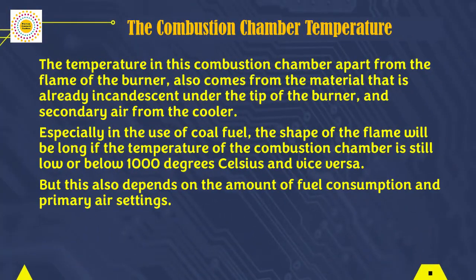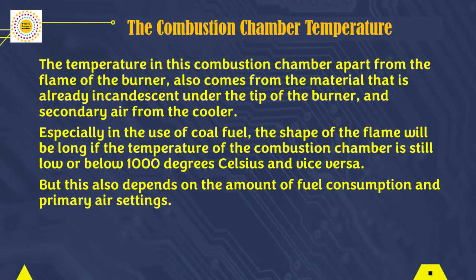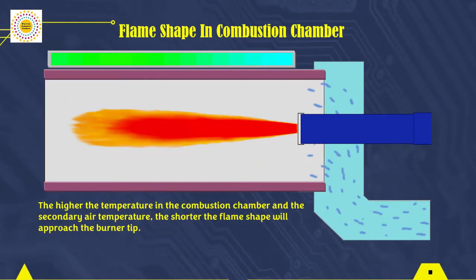Next is the combustion chamber temperature. The temperature in this combustion chamber, apart from the flame of the burner, also comes from the material that is already incandescent under the tip of the burner and secondary air from the cooler. Especially in the use of coal fuel, the shape of the flame will be long if the temperature of the combustion chamber is still low or below 1000 degrees Celsius, and vice versa. But this also depends on the amount of fuel consumption and primary air settings. The higher the temperature in the combustion chamber and the secondary air temperature, the shorter the flame shape will approach the burner tip.